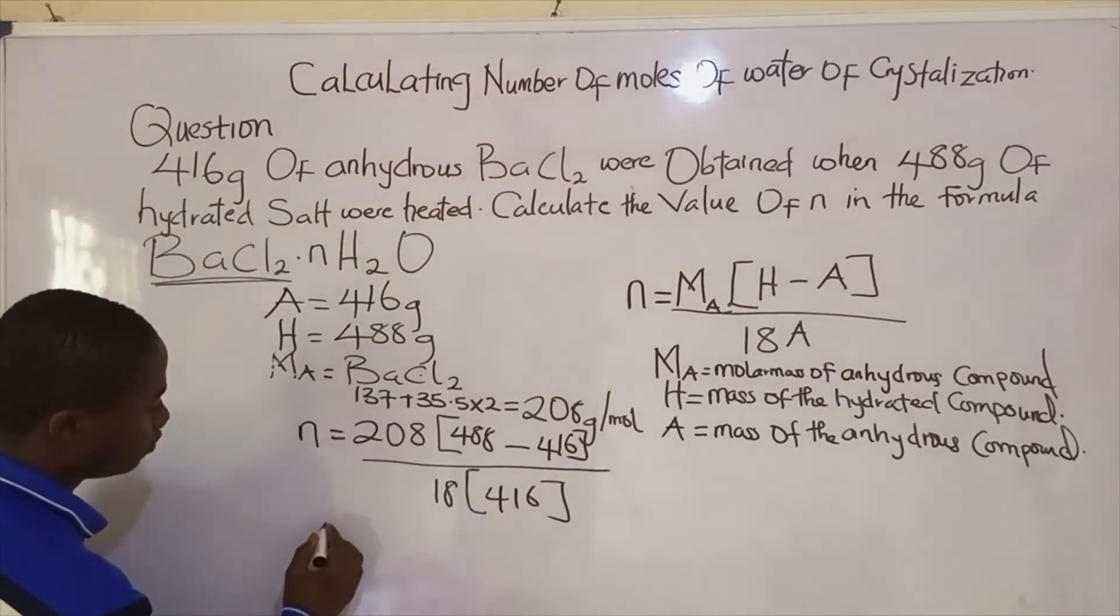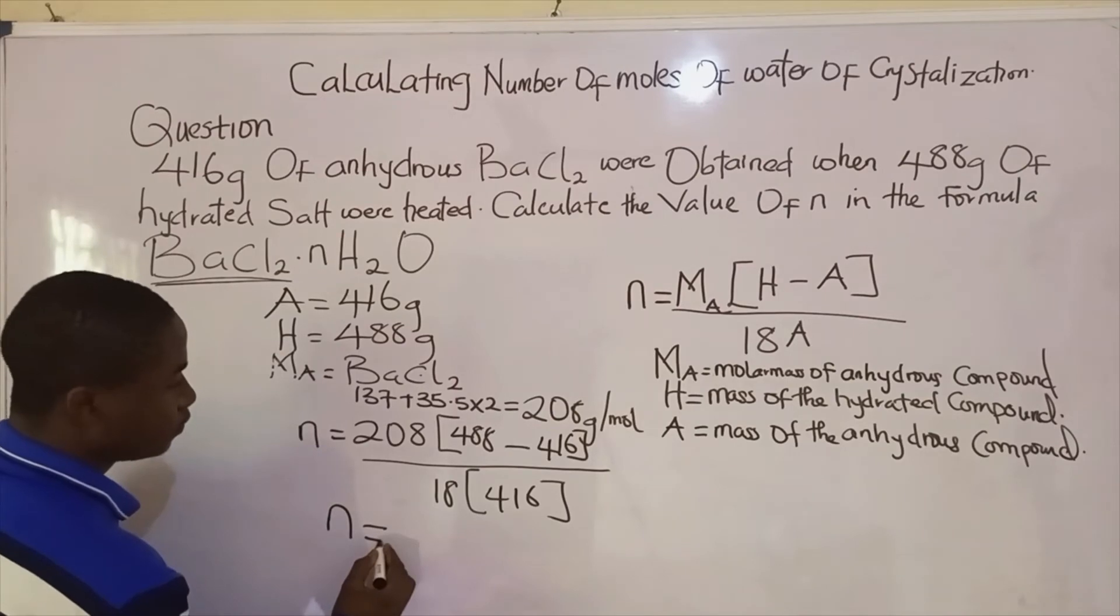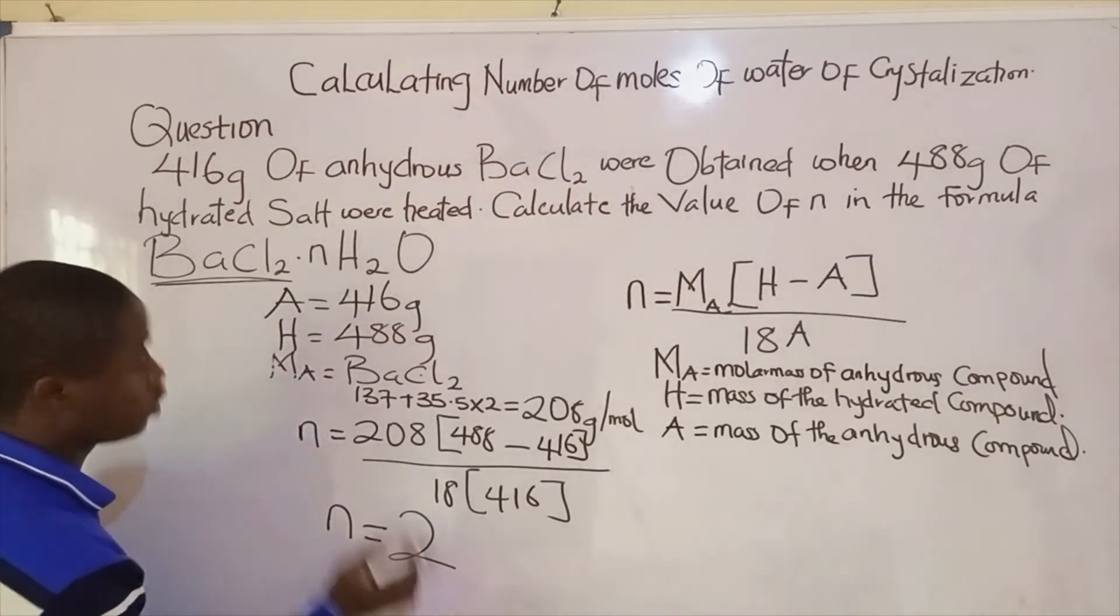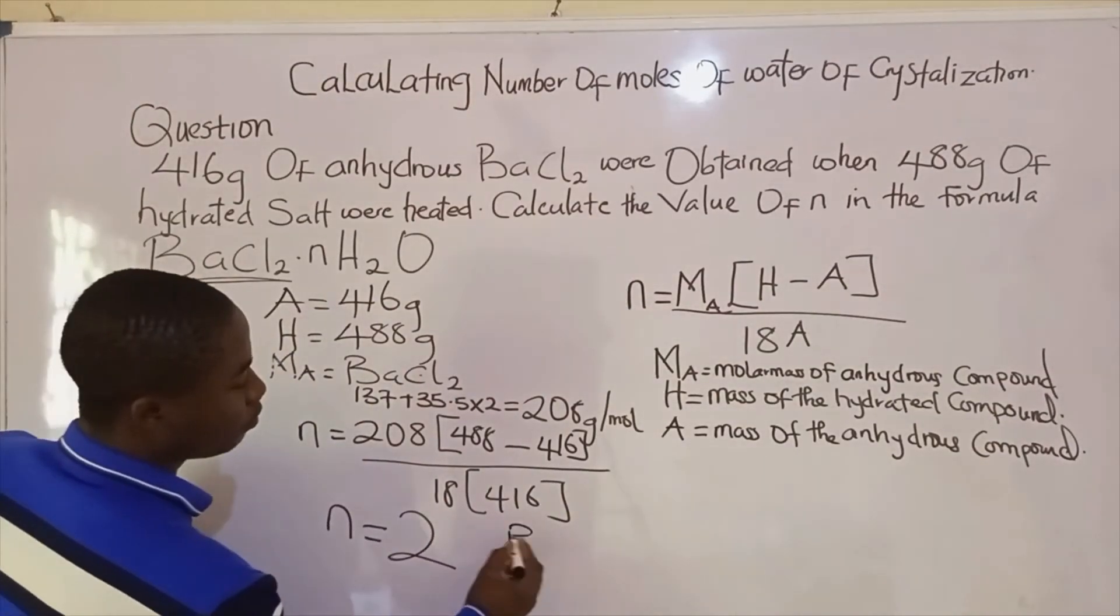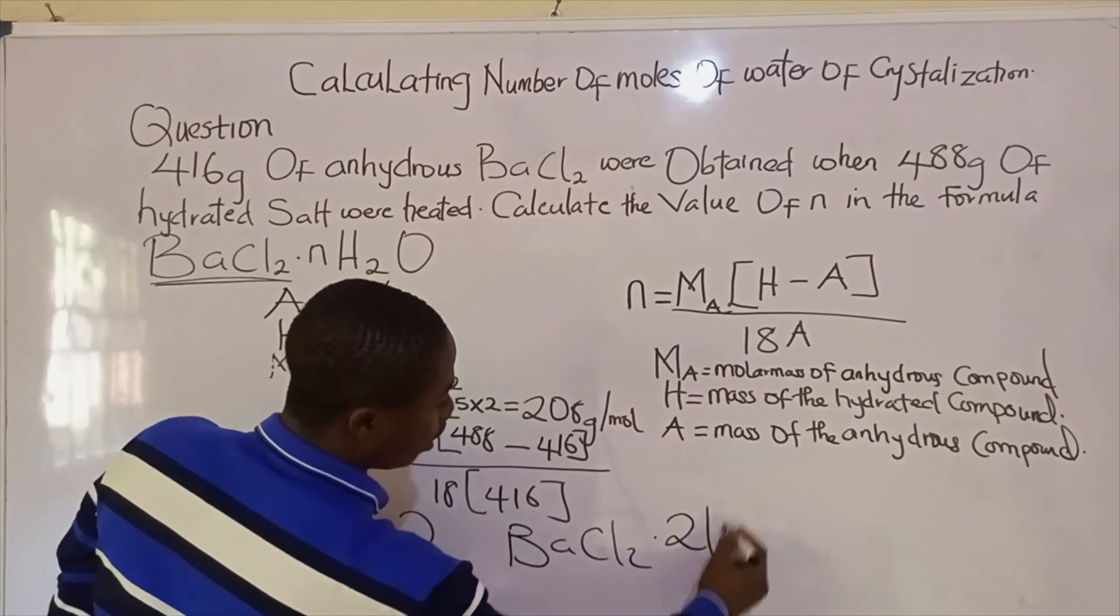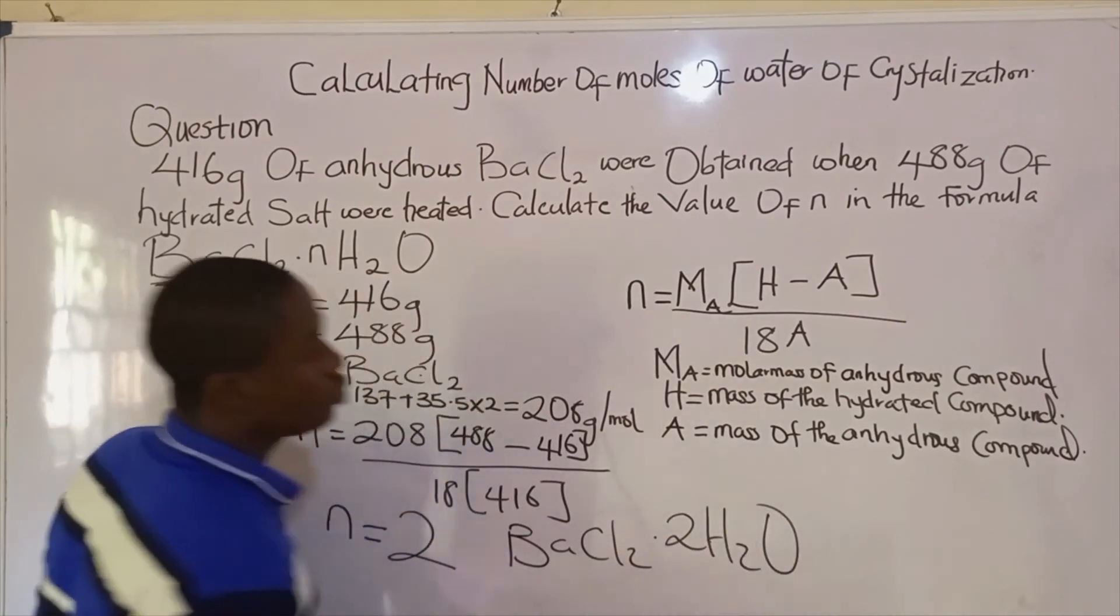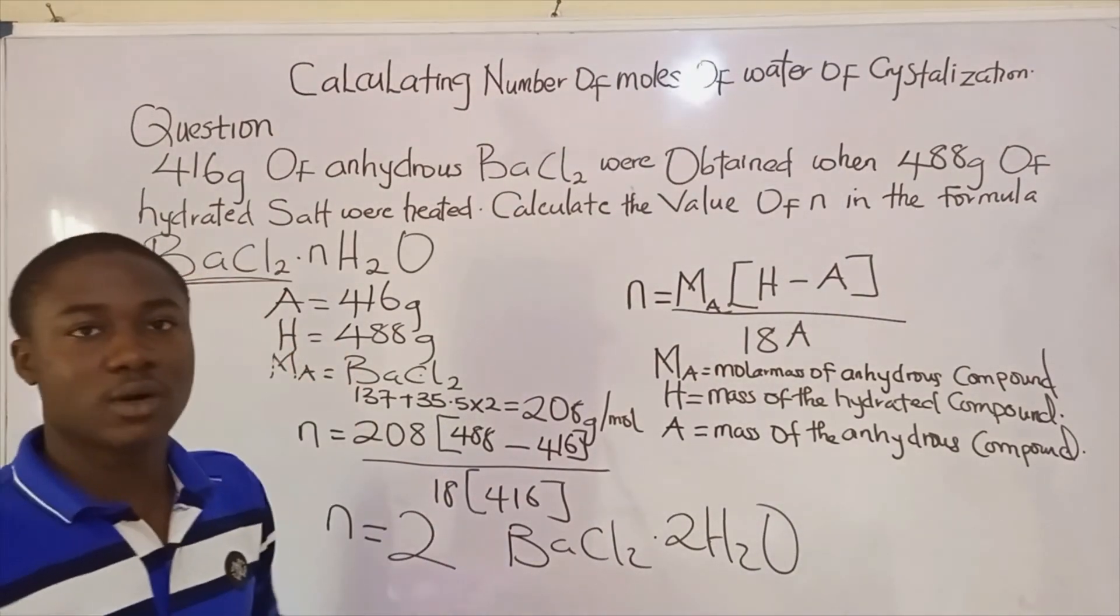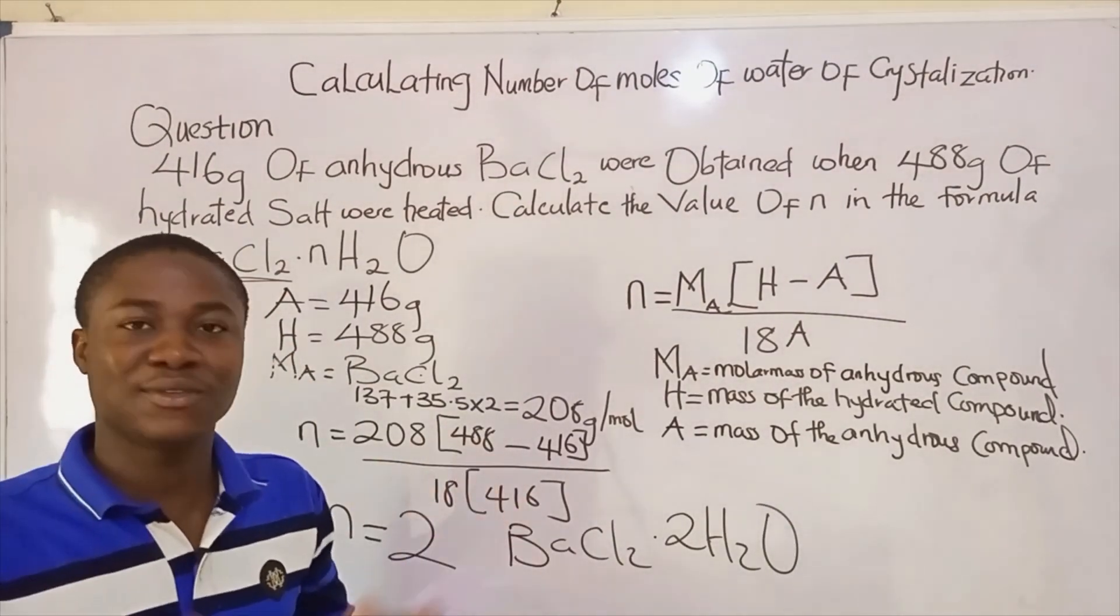Okay? So when we calculate, we get the value of the number of moles of the water crystallization to be two moles. So the compound becomes barium chloride dot 2H₂O. So this is how to solve problems under calculating number of moles of the water crystallization. Thanks for watching.